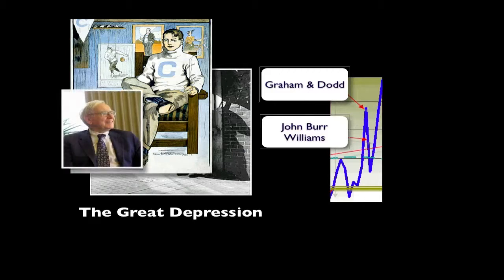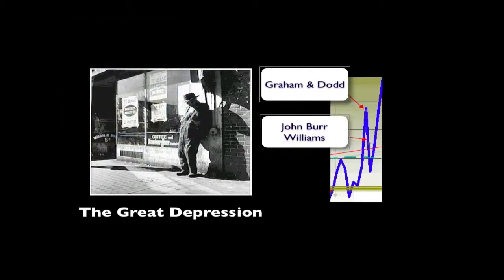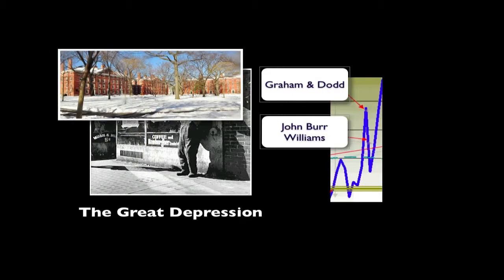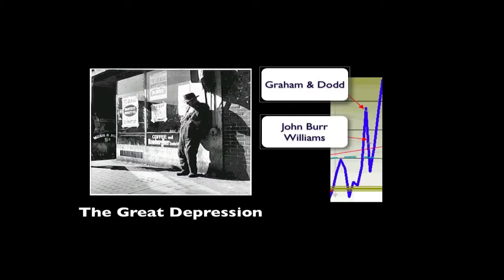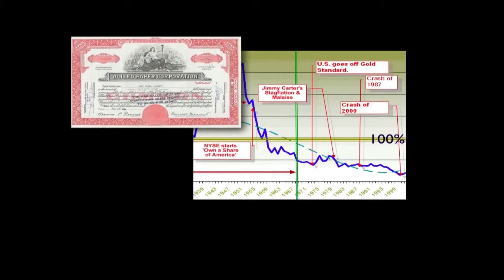Warren Buffett, who later became one of the most famous investors of the twentieth century, was a student of Ben Graham at Columbia, and later worked for him in his investment advisory firm. John Burr Williams, while at Harvard University, wrote a paper on valuing common stock based on the future value of dividends. Both Benjamin Graham and John Burr Williams had practical experience working in the stock market. Although no one realized it at the time, this was the end of the great age of dividend yields. Never again were investors so well rewarded by dividends paid by issuers of common stocks.